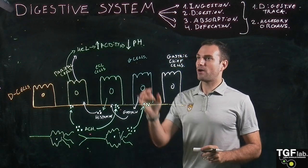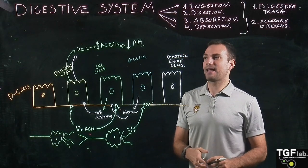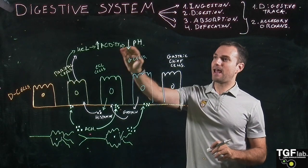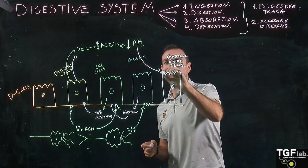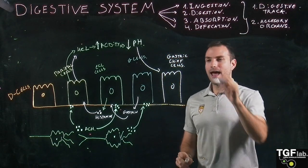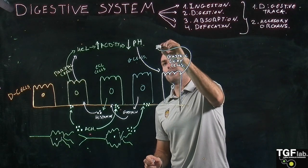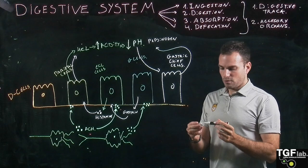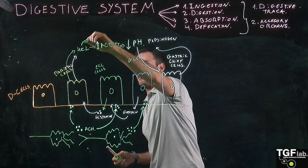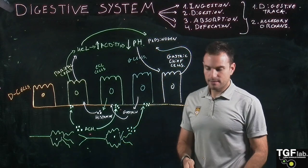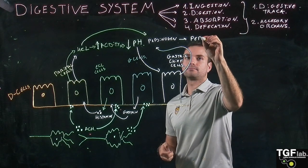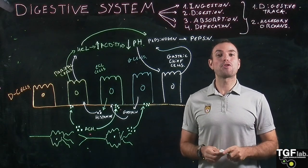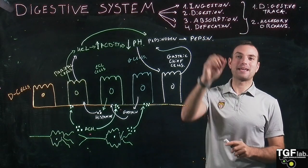The hydrochloric acid is really important because it converts pepsinogen into pepsin. This decrease in pH has an effect on the gastric chief cells, which secrete pepsinogen. The HCl is essential for the conversion of pepsinogen into pepsin, and pepsin is the enzyme that degrades proteins in our body into amino acids — so this is essential for protein digestion.